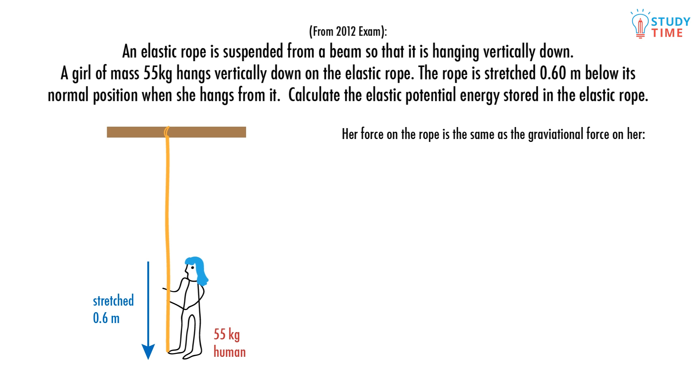The first thing to recognize here is that the force she exerts on the rope is the same as the gravitational force exerted on her as it's just her weight that stretches out the rope. Force equals mass times acceleration and it also equals the spring constant times x. So mg equals kx. Substituting in what we know, 9.8 times 55 equals k times 0.6 and rearranging k must equal 898.3.